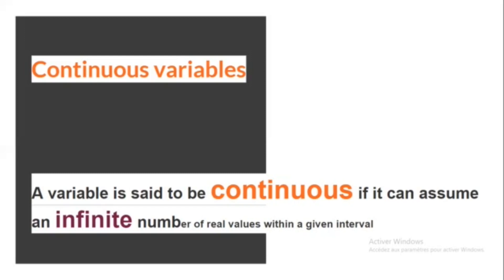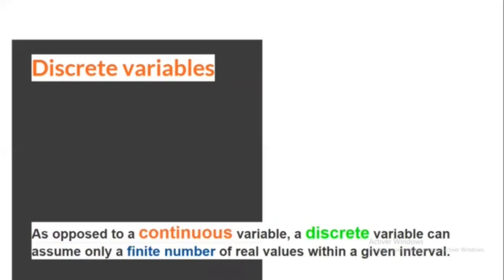As opposed to a continuous variable, a discrete variable can assume only a finite number of real values within a given interval. An example of a discrete variable would be the score given by a judge to a gymnast in competition. The range is 0 to 10 and the score is always given to one decimal, e.g., a score of 8.5. You can enumerate all possible values 0, 0.1, 0.2, etc., and see that the number of possible values is finite — it is 101. Another example of a discrete variable is the number of people in a household. It is not possible for a household to include a fractional number of people like 2.27.